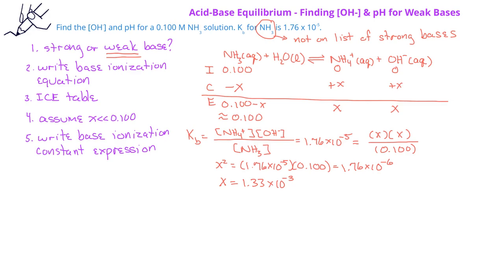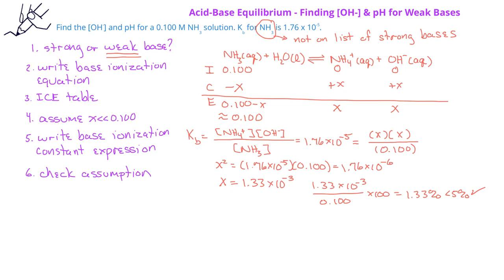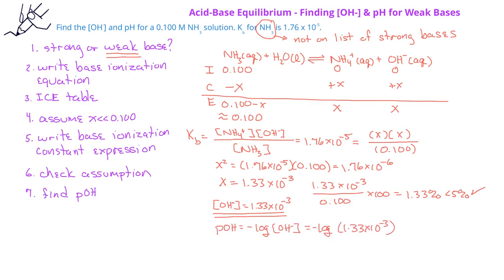Since we made the assumption that x is much less than 0.1, we can now check that assumption. 1.34 times 10 to the minus 3 divided by 0.1 times 100 is 1.34 percent. This is less than 5 percent, so this was a valid assumption. Now that we know the value of x, it equals the hydroxide ion concentration at equilibrium. Since we have the hydroxide ion concentration, we can find the pOH: pOH equals negative log of 1.34 times 10 to the negative 3, giving a pOH of 2.873.